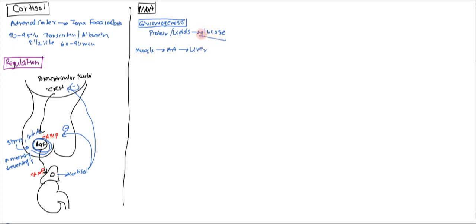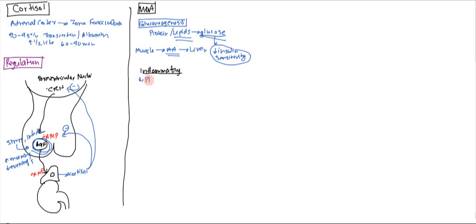When you have glucose, you don't want it going up into the muscle, so cortisol also decreases insulin sensitivity — this is called adrenal diabetes. Remember, we want to mobilize amino acids and lipids, and many inflammatory processes are centered around proteins and lipids. Regarding lipids, cortisol decreases phospholipase A2, leading to a decrease in prostaglandins and leukotrienes, which leads to a decrease in migration and phagocytosis.